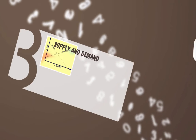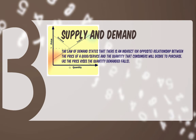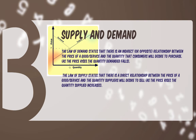The third feature of the free enterprise system, linking closely with prices, is the interaction of supply and demand. Consumers in a free enterprise system are represented by the law of demand, which states that there is an indirect or opposite relationship between the price of a good or service and the quantity demanded that consumers desire to purchase — as the price rises, the quantity demanded will fall. Suppliers, on the other hand, are represented by the law of supply, which states that there is a direct relationship between the price and the quantity suppliers desire to sell — as the price rises, the quantity supplied increases.